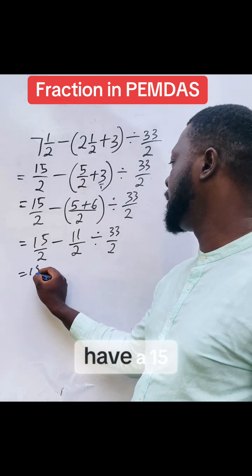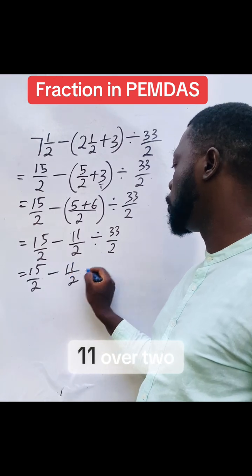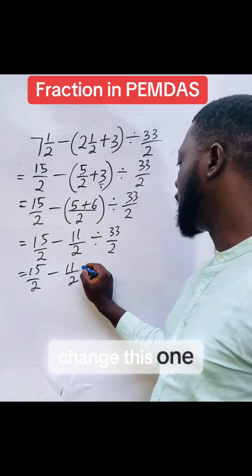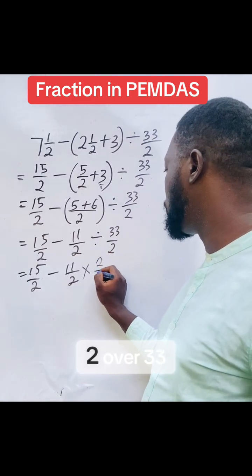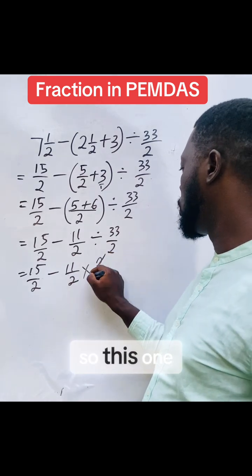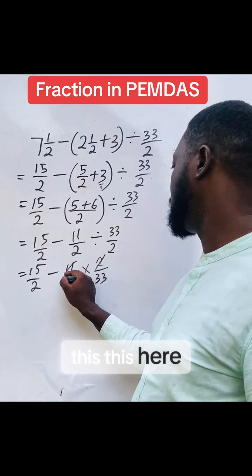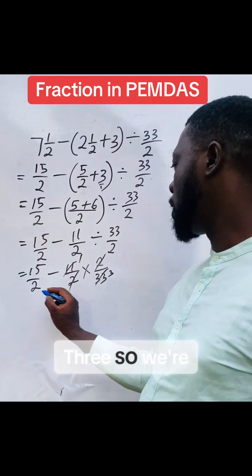So you have 15 over 2 minus 11 over 2. Work on this. So if you change this one to multiplication, this one becomes 2 over 33. So this one will go with this. This here one will give me 3. So we're left with what?